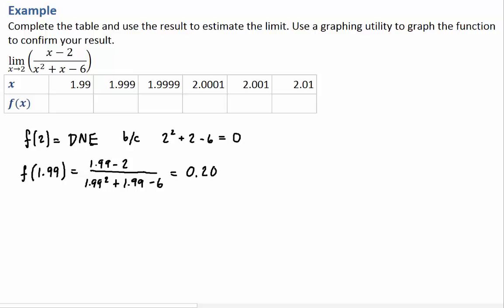I calculated this previously, and it is 0.2004 and then some decimals, so it's approximately equal to that. Let's see what happens when we evaluate 1.999.